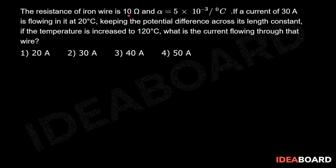The resistance of iron wire is 10 Ω and α = 5 × 10⁻³ per degree Celsius. If a current of 30 ampere is flowing in it at 20°C, keeping the potential difference across its length constant, if the temperature is increased to 120°C, what is the current flowing through that wire?